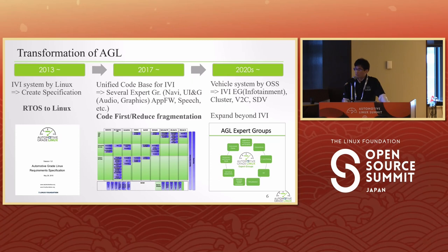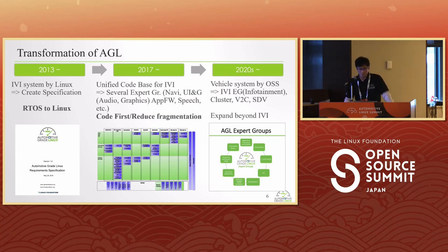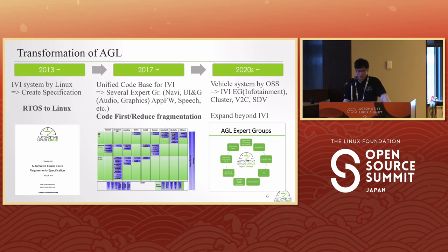Here is a brief transformation timeline of AGL. AGL was founded in 2013, aimed at creating an IVI system by Linux. The first specification was launched in 2015, with the main target being a move from RTOS to Linux. Around 2017, the focus shifted to creating a unified code base for IVI, and several expert groups were launched — Navigation, UI and Graphics, Audio, Application Framework, Security Framework, and Speech/Voice Recognition — focusing on code-first to reduce fragmentation.